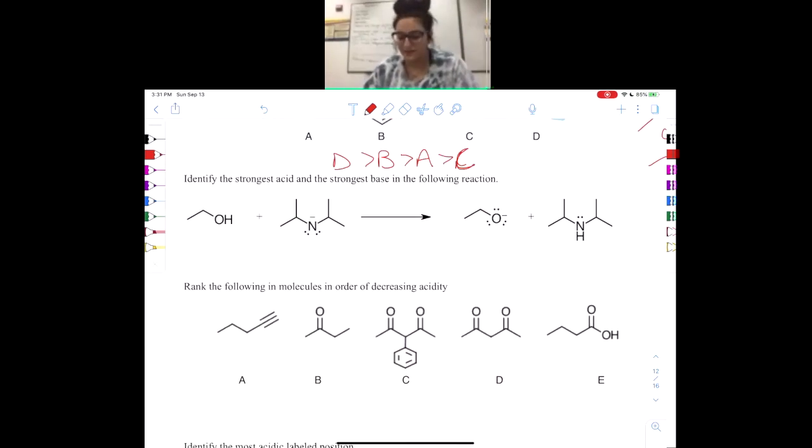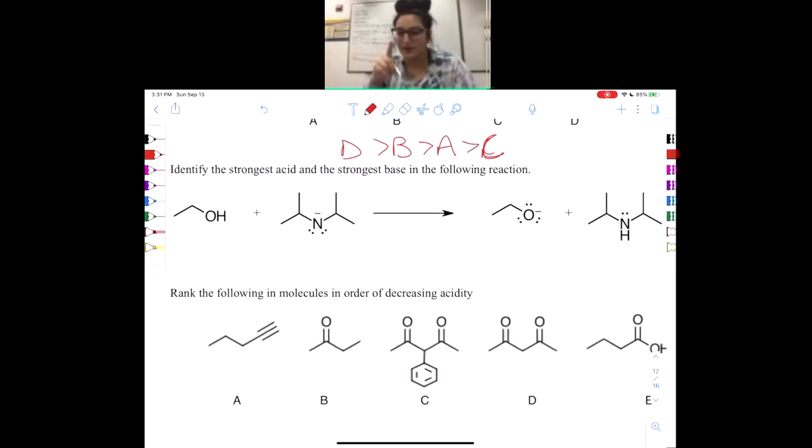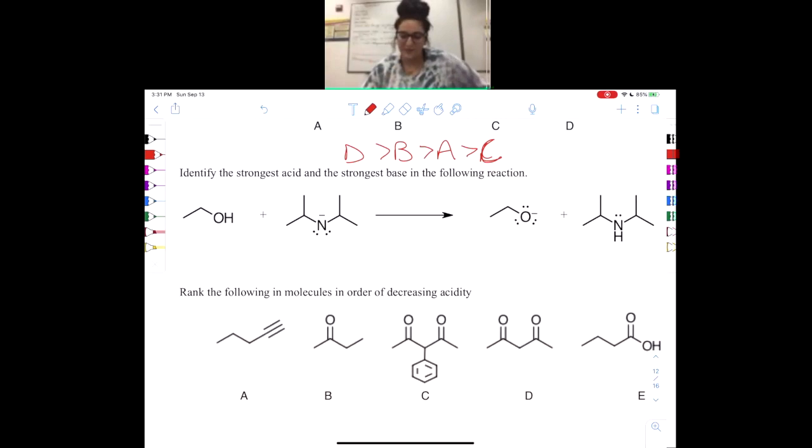So now we're actually going to do an acid-base reaction. First things first, we're going to label our acid and base. We said before that nine times out of ten, our alcohol is going to be the acid, and we can confirm that because the nitrogen here has a negative charge. The negative charge is always going to be the base. So, base and acid. The electrons on the nitrogen are going to steal that hydrogen, give the electrons back to the oxygen. So in the product, we have the conjugate base, which is an alkoxide, and the conjugate acid.